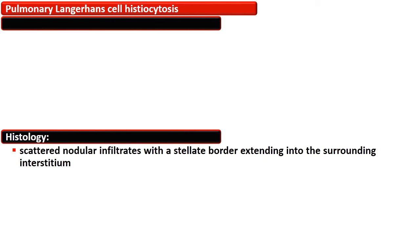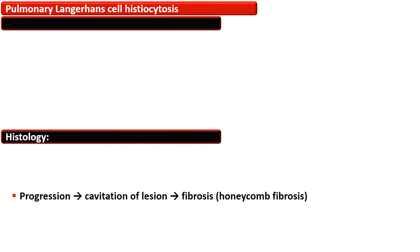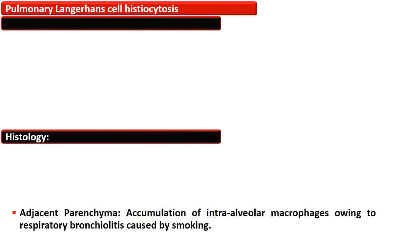The histology is almost the same. There is a scattered nodular infiltrate with a stellate border extending into the surrounding interstitium. The site is the subpleura or bronchioles. With progression of the disease, there is cavitation of the lesion and subsequent fibrosis of the lung, which gives a characteristic honeycomb appearance. The adjacent parenchyma also shows accumulation of intraalveolar macrophages due to respiratory bronchiolitis caused by smoking.